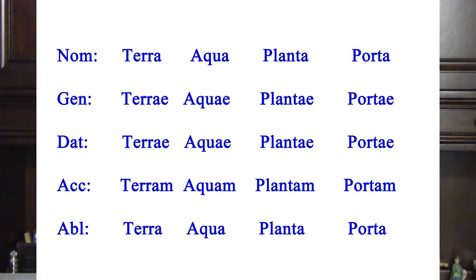Let's look at a comparison of several nouns belonging to the first declension: terra, aqua, planta, porta. They are all declined in the same fashion. Nominativus: terra, aqua, planta, porta. Genitivus: terrae, aquae, plantae, portae. Dativus: terrae, aquae, plantae, portae. Accusativus: terram, aquam, plantam, portam. Ablativus: terra, aqua, planta, porta. Once you learn the first declension, any other noun of that declension is declined the same way.